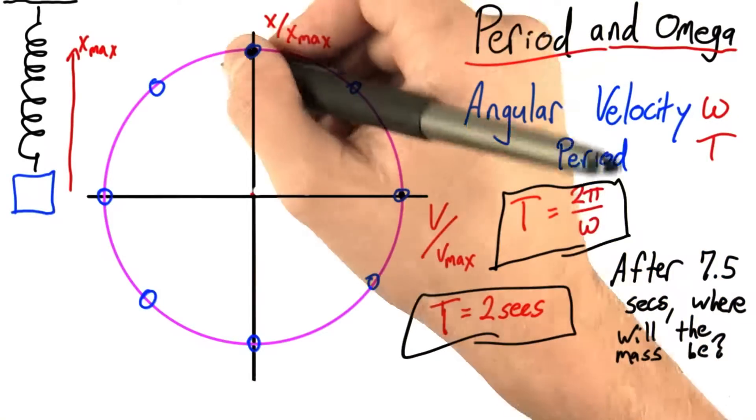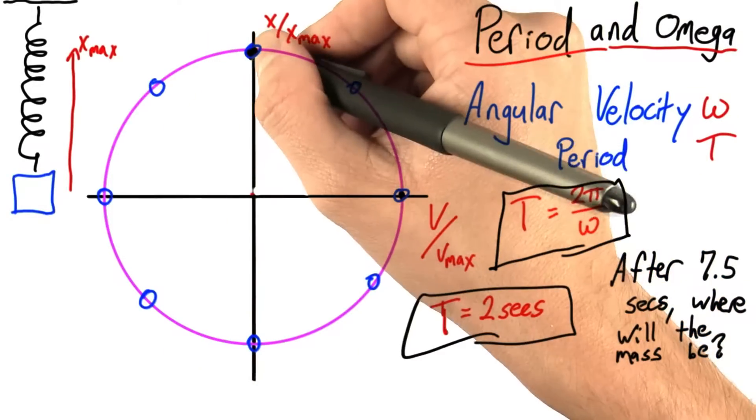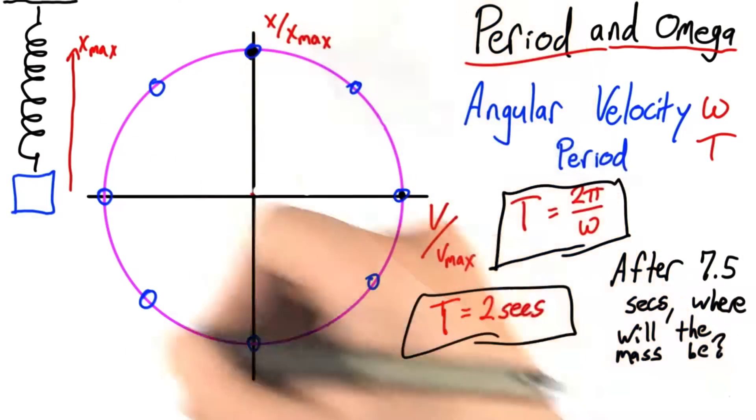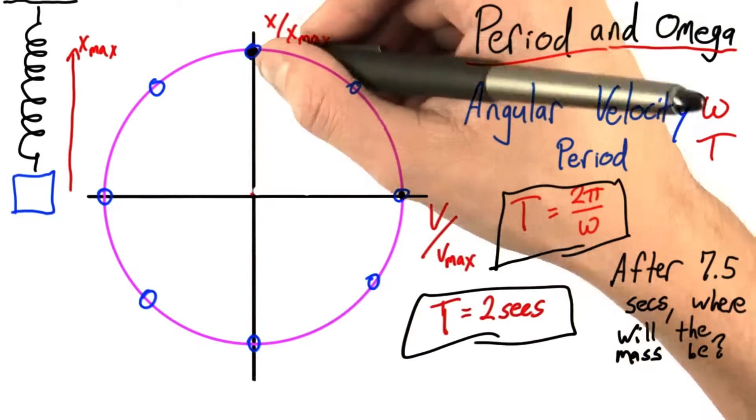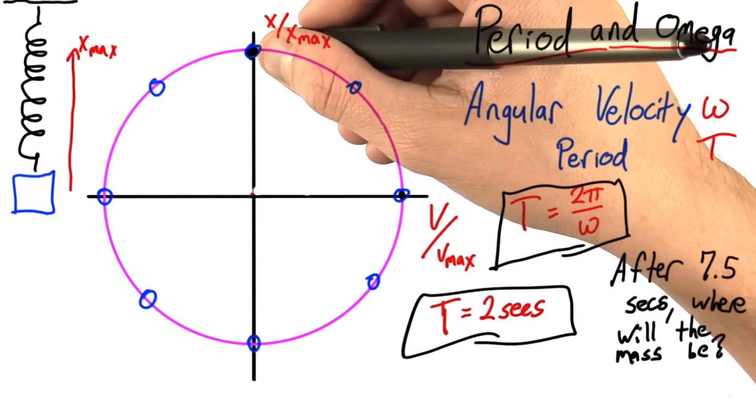If our mass starts off up here, after two seconds it's completed one period. Two more, it's gone up here. Two more, another period. So far we've had six seconds elapse.